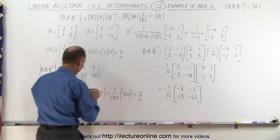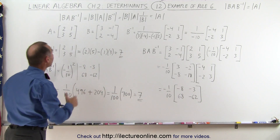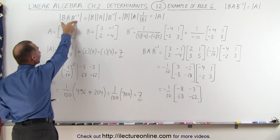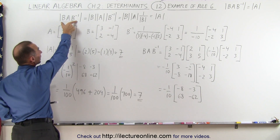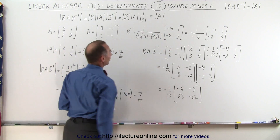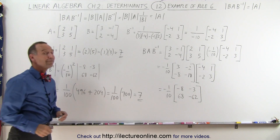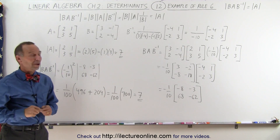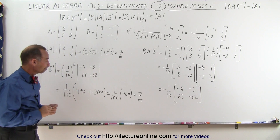And notice we've just shown that the determinant of B times A times the inverse of B is equal to the determinant of A. You can see the rule appears to work. That's how it's done.